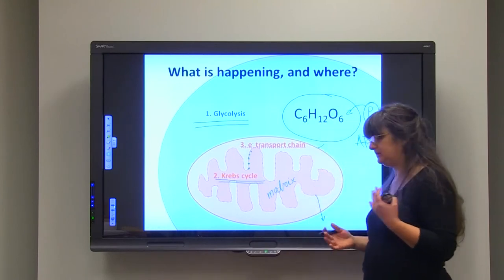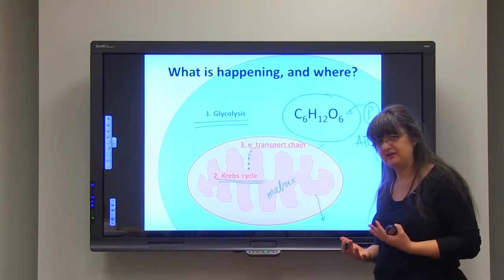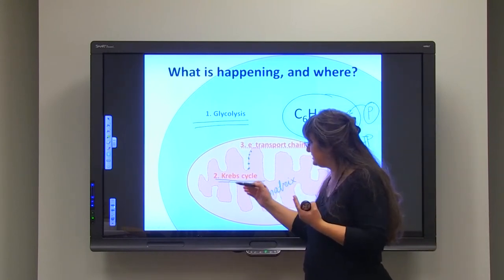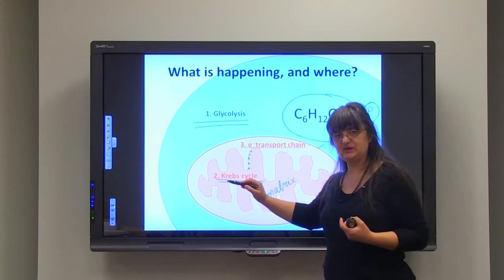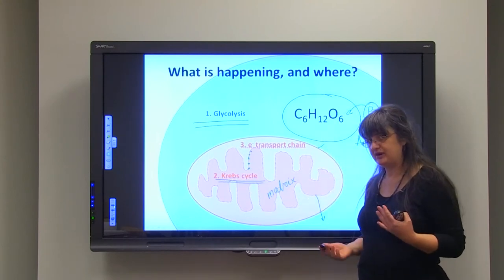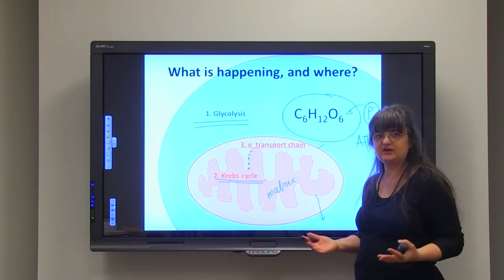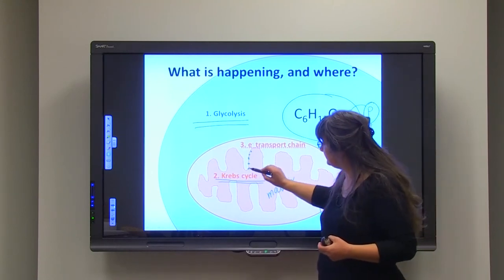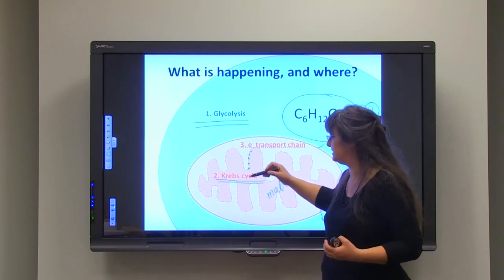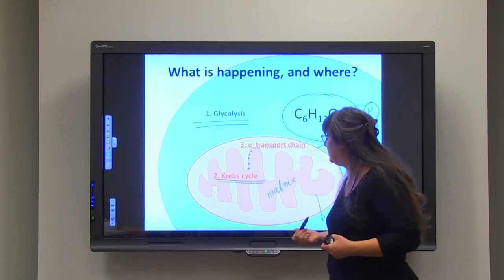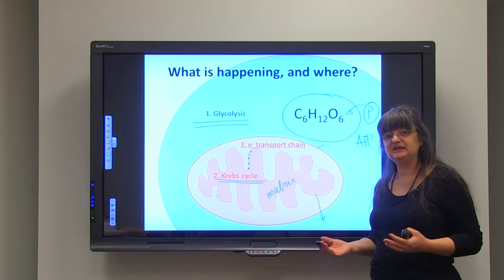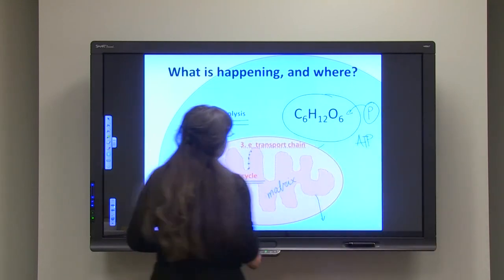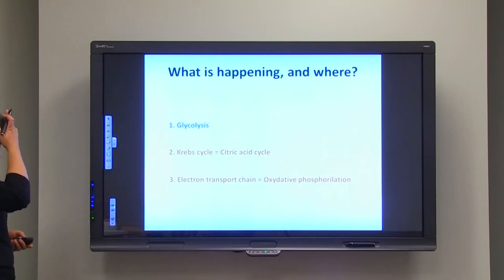That is also one of the leads for that endosymbiotic theory, because if you just imagine that this used to be a prokaryote that was on its own. Today, our prokaryotes that we know, like Escherichia coli or E. coli, have the proteins that are needed, enzymes that are needed for breaking down glucose. They are embedded in their membrane.